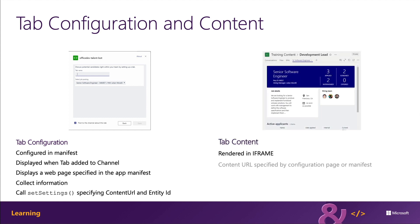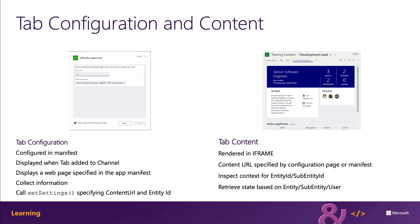Similar to a personal tab, the content displayed in a channel tab is displayed in an iframe. The URL loaded in the iframe is defined by the content URL property that is specified on the configuration page. The web app can then use the Microsoft Teams JavaScript SDK to obtain the entity ID or subentity ID properties to determine the content to display.